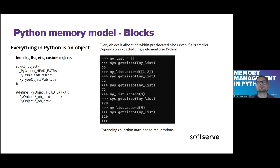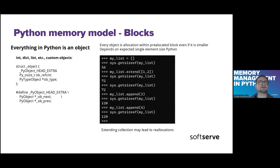Consider this simple example. When we create an empty list, this is the initial allocation. When we add new elements to our list, the list size extends — but not always — because Python tries to predict what we would like to achieve. The list can grow, so it usually pre-allocates a bigger block of memory. If we add new elements and they fit the previously allocated memory, it won't be extended.